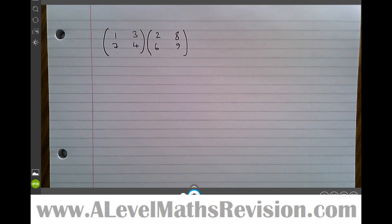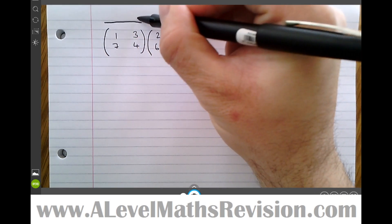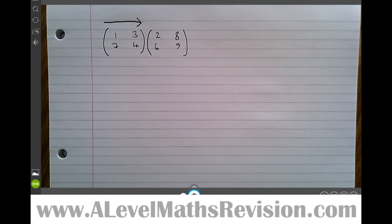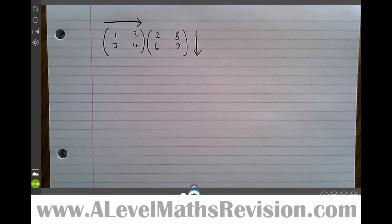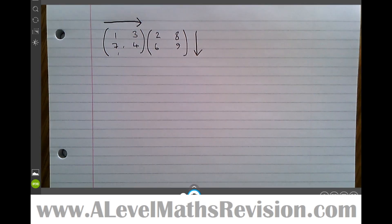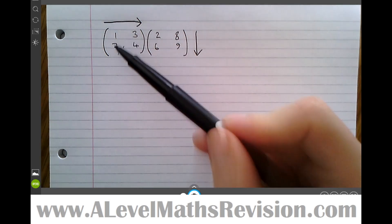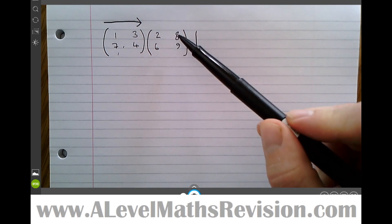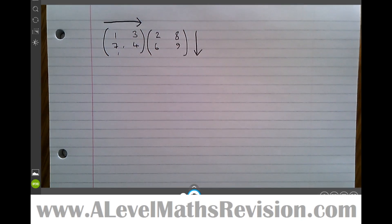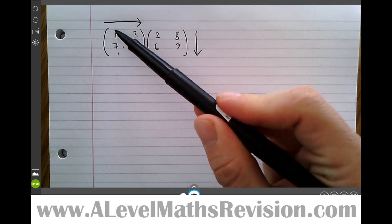We're going to multiply these matrices together by multiplying all the elements in a certain order. The first rule to remember is: in the first matrix we must start at the left and move to the right, and in the second matrix we must start at the top and move to the bottom. In the first matrix we must go left to right — no choice there. In the second matrix we must move from top to bottom, but we are allowed to choose whether we start on the left or the right.